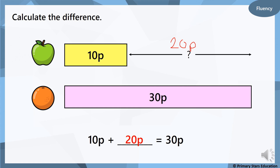So you can see there's one part and there's two parts, which total 30p — and that's the whole part of your bar model.